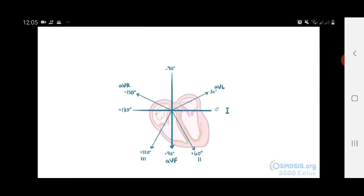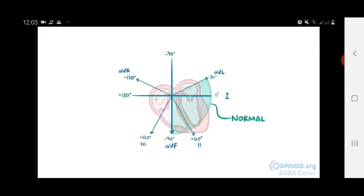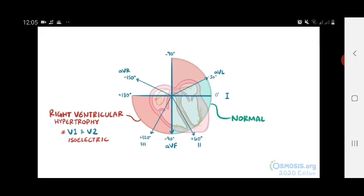Alright, as a quick recap, a normal heart axis is between negative 30 and plus 90 degrees. Right ventricular hypertrophy can cause the axis to be between plus 90 and plus 180 degrees, and can sometimes cause the V1 and V2 chest leads to appear isoelectric. Left ventricular hypertrophy can cause the axis to be between negative 30 and negative 90 degrees, and can sometimes cause the V5 and V6 chest leads to appear isoelectric.